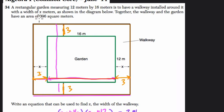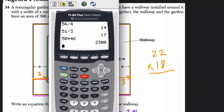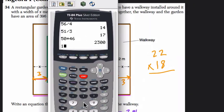Together, the walkway and the garden have an area of 396 square meters. Let's just test that out. So we have 3 and 16 and 3, that's 22. And then we have 3 and 12 and 3, that's 18. So when we multiply 18 by 22, we do need to get 396. 18 by 22. And yes, it works.